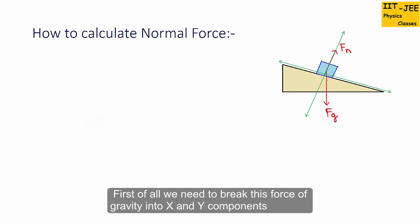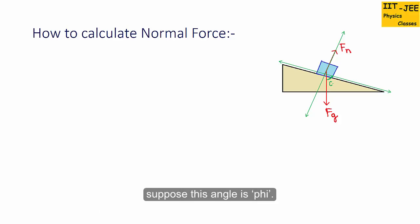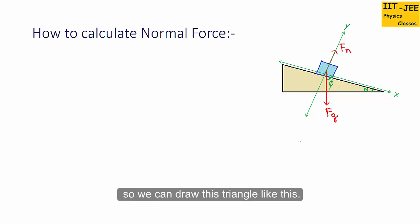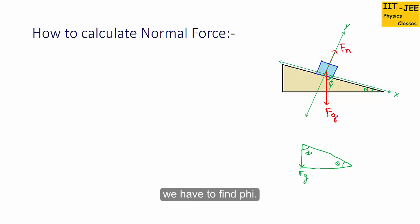First of all, we need to break the force of gravity into x and y components. For that we need to find the angle of force of gravity from the x-axis — suppose this angle is phi. The angle of the inclined surface is theta, so we make this triangle. This is our fg, this is the inclined surface, and this angle is theta. We have to find phi.